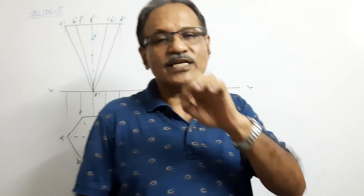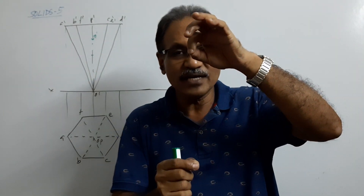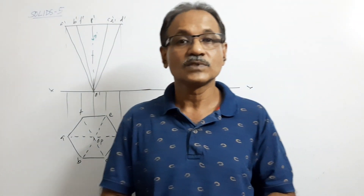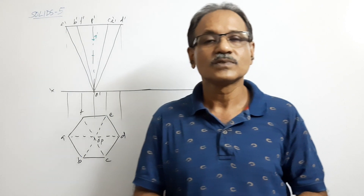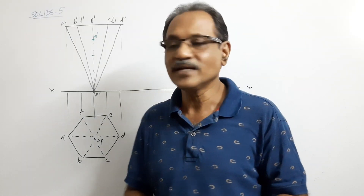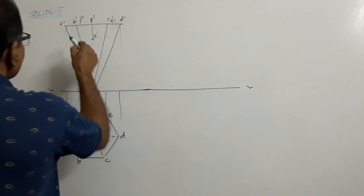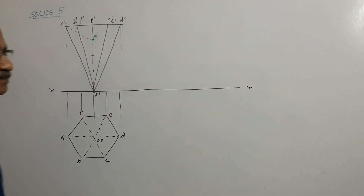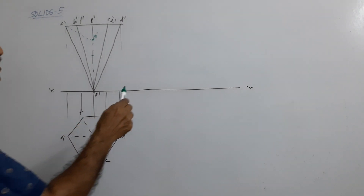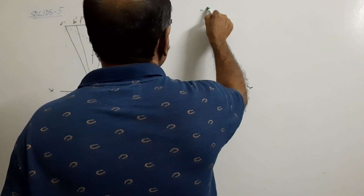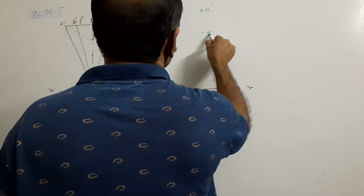When an object is suspended on a string, there is a condition to be satisfied: the point of suspension and the center of gravity, when connected, must be vertical. So A dash and G dash must become vertical. What I do is choose A dash, A1 dash, and G1 dash accordingly.